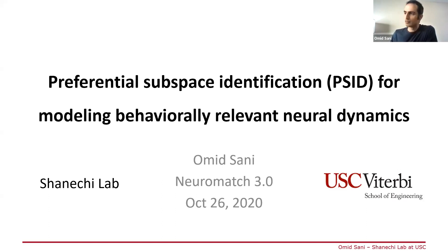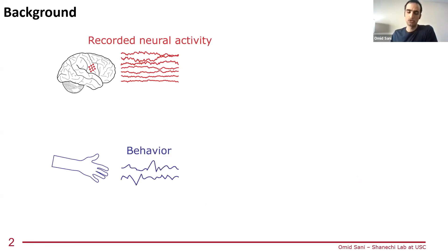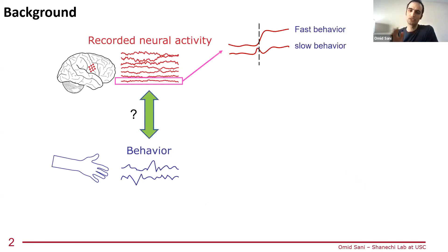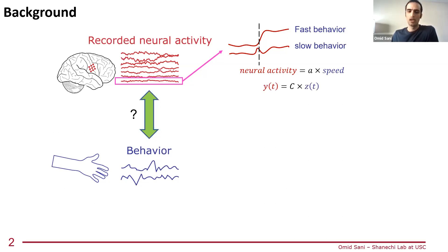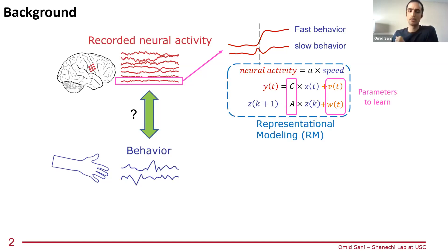To give some background, a lot of studies have recordings from the brain and some behavior that is tracked, and we're interested in studying the relation between the two. One of the traditional approaches is based on the idea of tuning, where the firing of some neuron goes up and down based on the behavior. This leads to a model where you have neural activity as a function of behavior at each point in time. You can also model the dynamics of behavior, which can help with reduction of noise, and it's largely based on physics, like the relation of velocity and position. Once you learn the parameters using least squares regression, you have what is typically called a representation model.